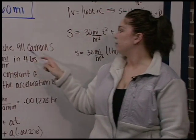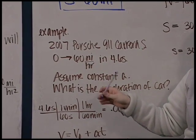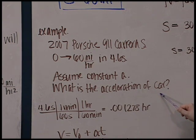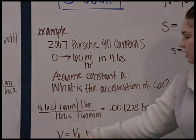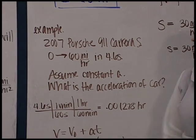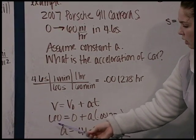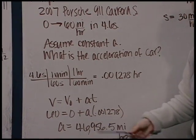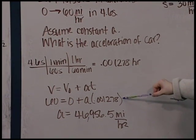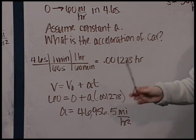The 2007 Porsche 911 Carrera S goes from 0 to 60 in 4.6 seconds. So we're going to assume that acceleration is constant. We want to find the acceleration of the car. So you convert 4.6 seconds into hours. And you just plug into your equation, linear acceleration equation, constant acceleration. So we end at 60 miles per hour. We started at 0. We're looking for acceleration. And we did it in 4.6 seconds, which is 0.001278 hours. A is 46,956.5 miles per hour squared.